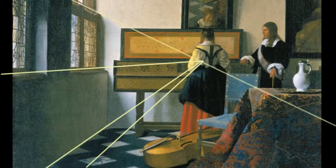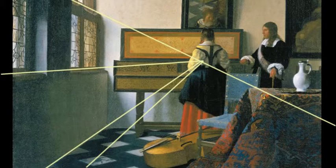Many have wondered how Vermeer managed the amazing degree of accuracy in his perspective scenes. Restorers have found the use of nothing more complicated than a pinhole, from which Vermeer would have stretched a secured string — maybe covered in powdered chalk — to mark off his guiding lines.